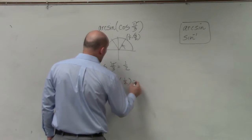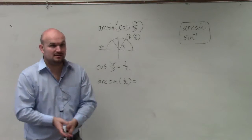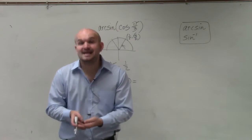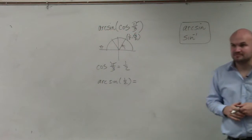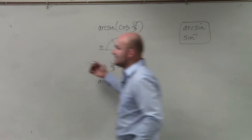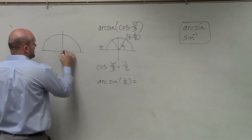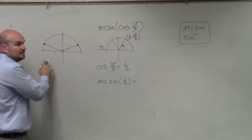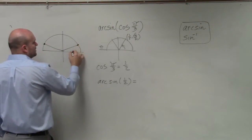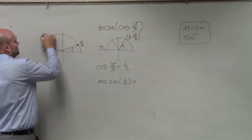So remember, arc sine though is now asking us for the angle. So what is the angle when sine is equal to 1 half? Well, there's two angles when sine is equal to 1 half. We have this angle and this angle. This angle was pi over 6. This angle is 5 pi over 6.